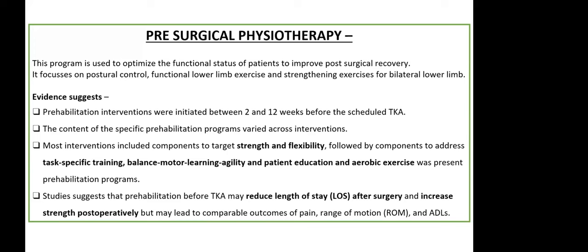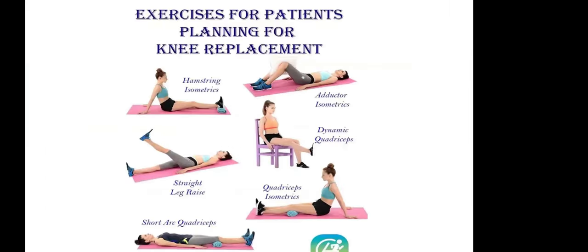Studies have suggested that pre-habilitation before TKR can reduce the length of stay after surgery, as well as improve post-op strength, which may also lead to better outcomes in pain, range of motion, and ADLs. Common exercises given for patients planning to undergo knee replacement include hamstring isometrics, adductor isometrics, dynamic cords, straight leg raising, quadriceps isometrics, and short arc quadriceps.